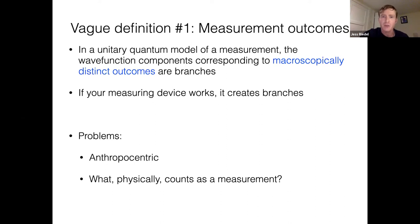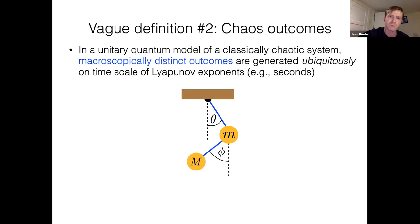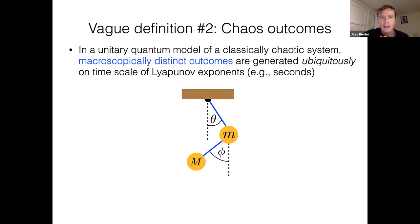The problem with this is that it's anthropocentric — it's concentrating on something that's happening in a laboratory. And it's not clear exactly what counts as a measurement. So let me try to generalize this a little bit. We're still going to be vague, but we're going to try to reduce our reliance on the concept of measurement.